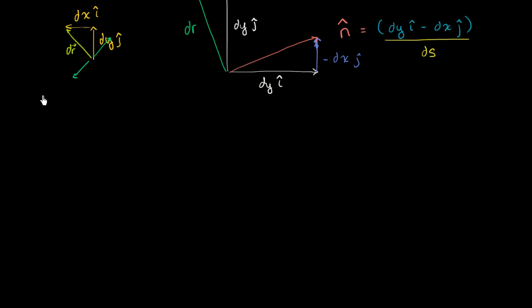The expression is the line integral around a closed loop, going in the positive counterclockwise orientation, of a vector field F dotted with the unit normal vector at any point on that curve, ds. So first let's conceptualize what this is even saying, and then let's manipulate it a little bit to see if we can come up with an interesting conclusion.